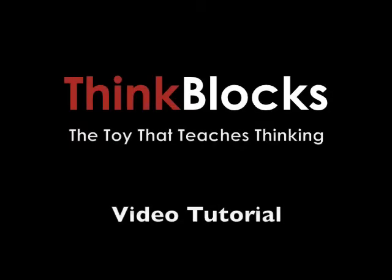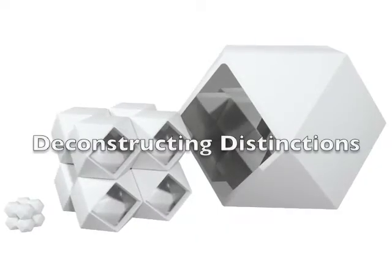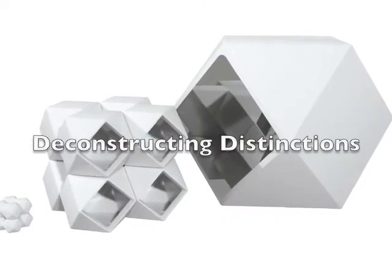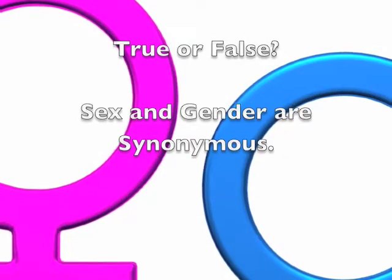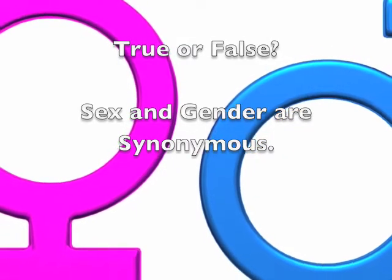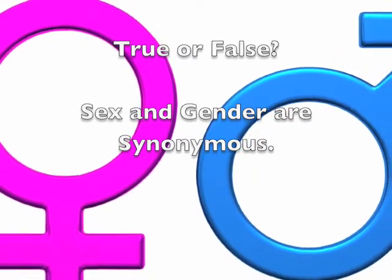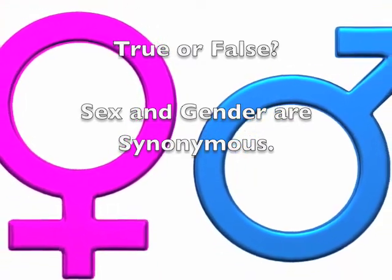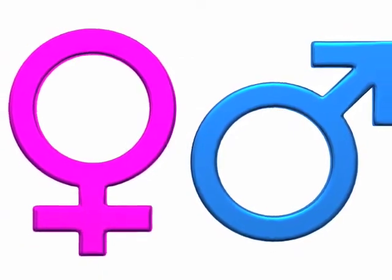You can use think blocks to deconstruct the meanings of any words and to clarify important differences. Here we compare the concepts of sex and gender. The sex and gender example is particularly powerful because people often misuse these terms with profound consequences.